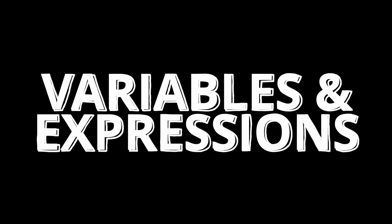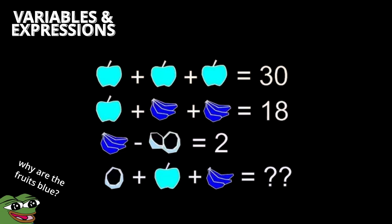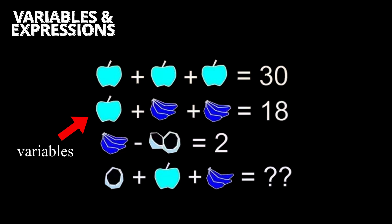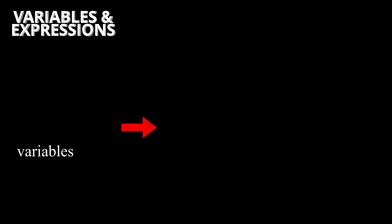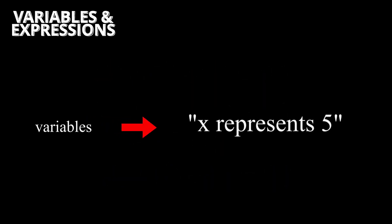Variables and Expressions. In algebra, we use symbols to represent unknown values. These symbols are called variables. A variable is just a letter, like x or y, that takes the place of a number.